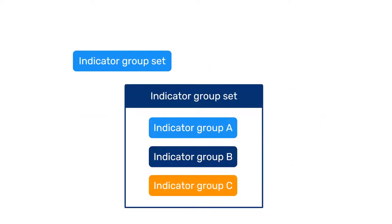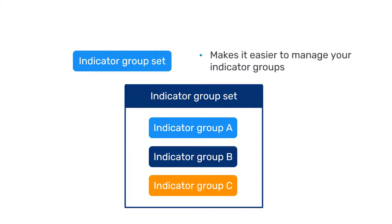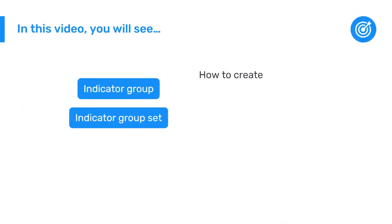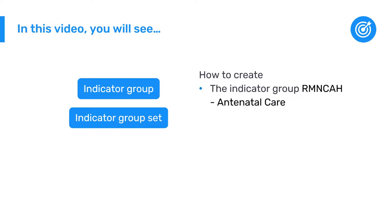Meanwhile, indicator group sets make it easier to manage your indicator groups in the maintenance app by categorizing them. In this video, we will show you how to create the indicator group RMN-CAH antenatal care, which groups together antenatal care indicators. Once we have created an indicator group, we will then create the indicator group set RMN-CAH and assign all of the RMN-CAH indicator groups to it.